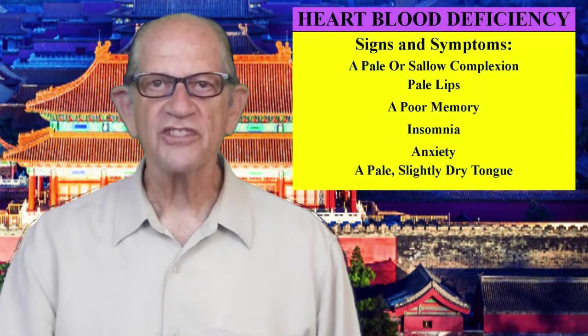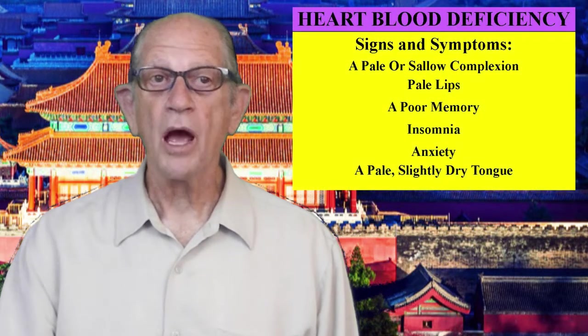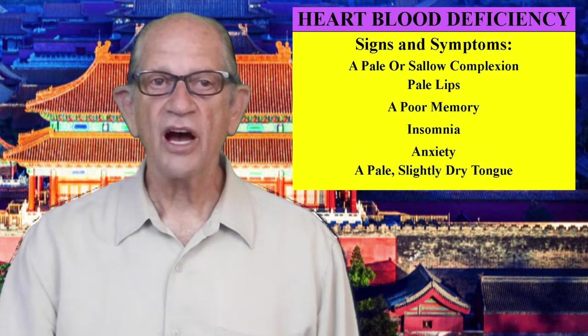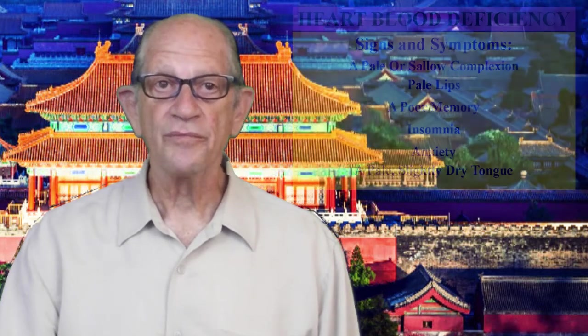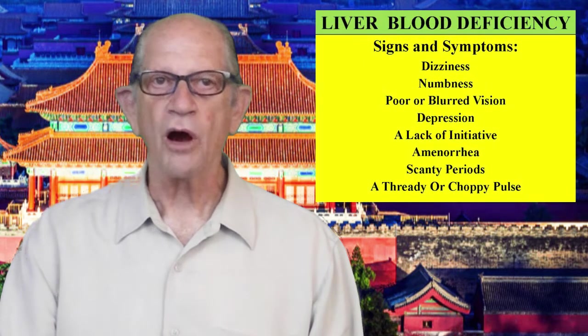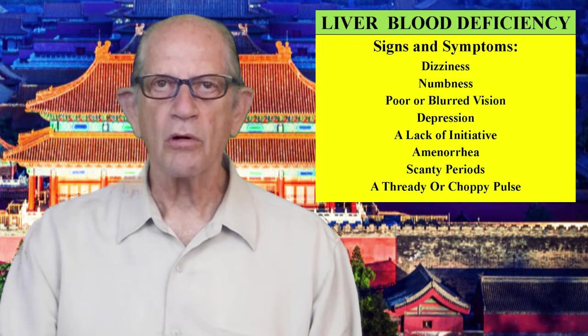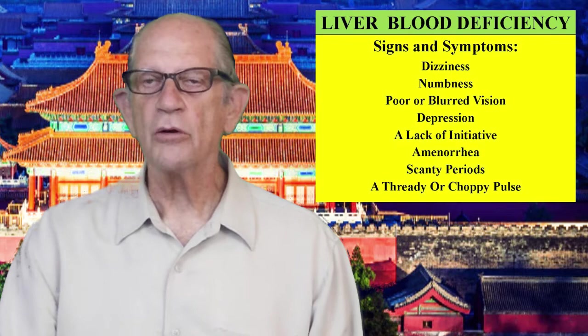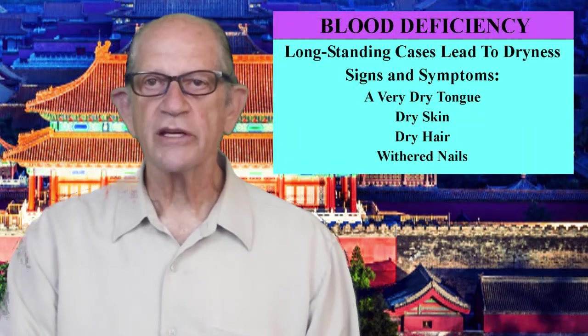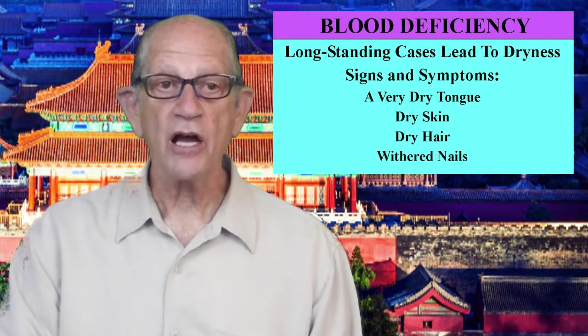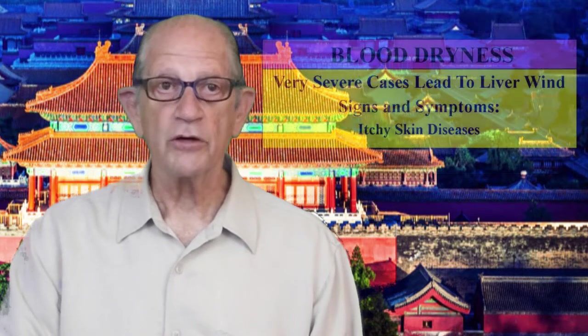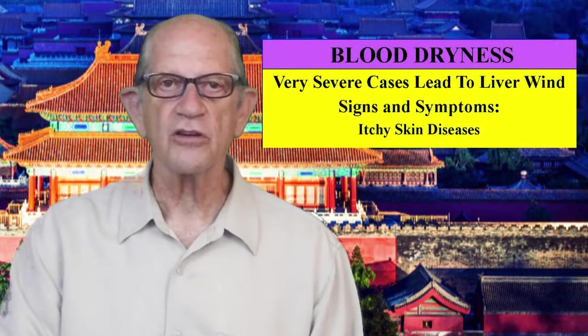Blood deficiency usually arises from spleen qi deficiency because spleen qi initiates the first step in blood production. Blood deficiency affects the liver and heart. Heart blood deficiency signs and symptoms are a pale or sallow complexion, pale lips, a poor memory, insomnia, anxiety, and a pale, slightly dry tongue. Liver blood deficiency signs and symptoms are dizziness, numbness, poor or blurred vision, depression, a lack of initiative, amenorrhea or scanty periods, and a thready or choppy pulse. In long-standing cases, blood deficiency can lead to pronounced dryness with a very dry tongue, dry skin, dry hair, and withered nails. In very severe cases, blood dryness can lead to liver wind manifesting as itchy skin diseases.